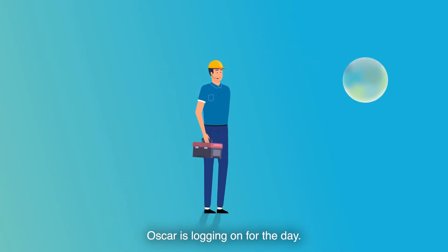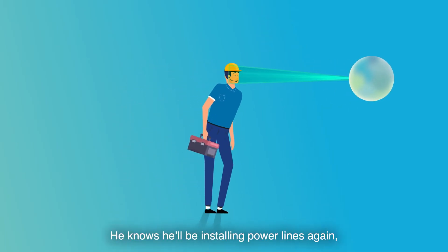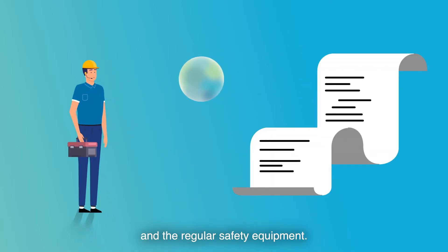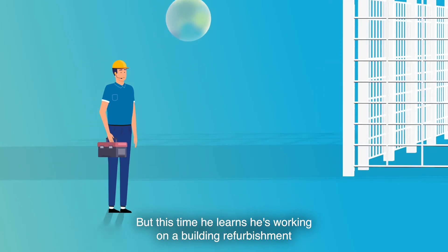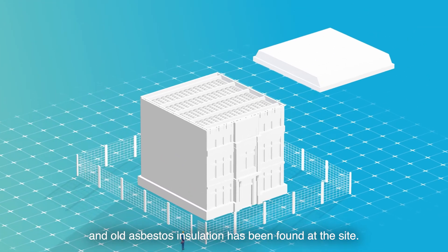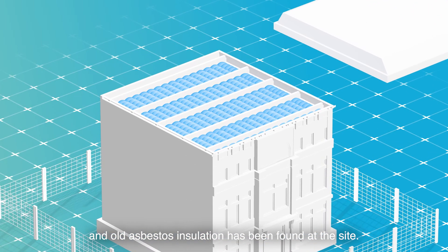Oscar is logging on for the day. He knows he'll be installing power lines again and he has all the right qualifications and the regular safety equipment. But this time he learns he's working on a building refurbishment and old asbestos insulation has been found at the site.